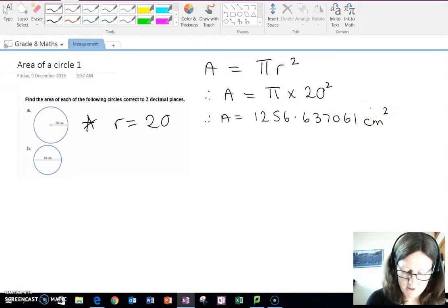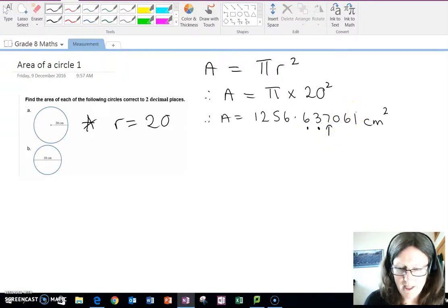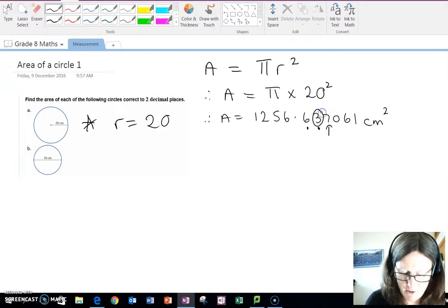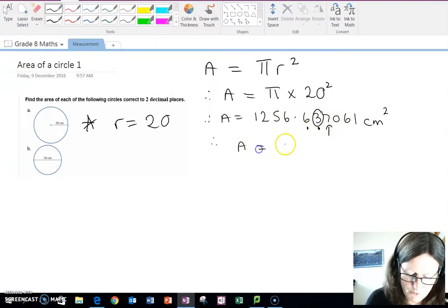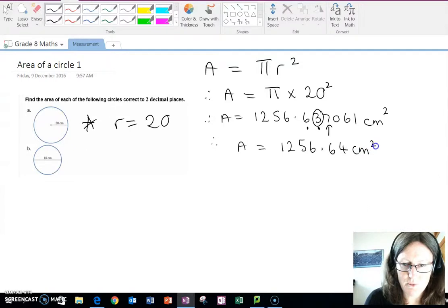If I read the question, it says round off to two decimal places. So I go 1, 2, look at the 1 after that, the third one. If that is greater than 5, 5 or greater, then this moves up 1. 7 is 5 or greater, so the 3 moves up to a 4. So area is 1256.64 centimeters squared.